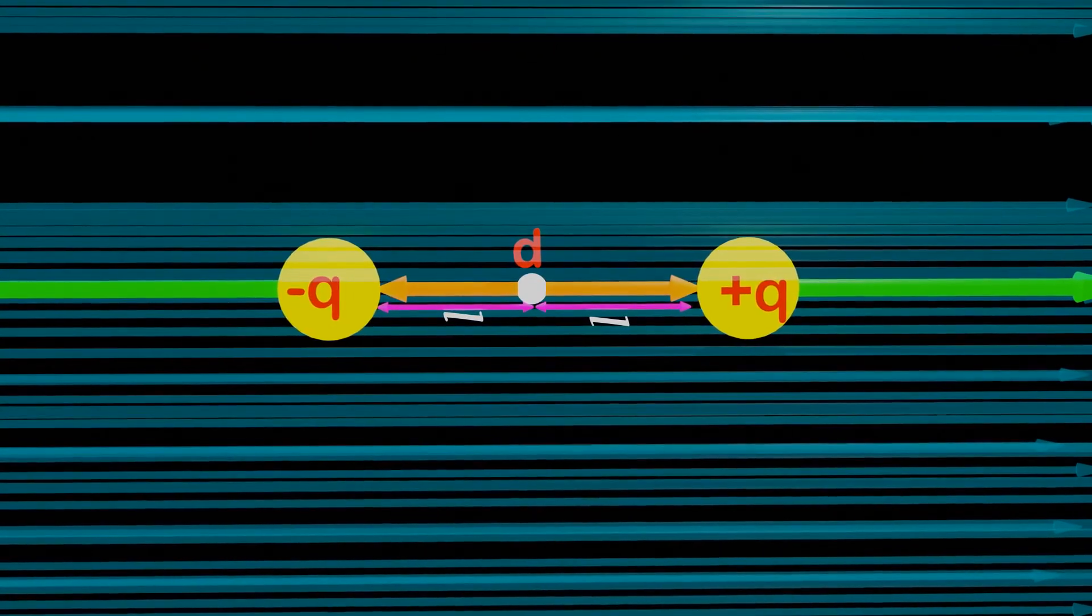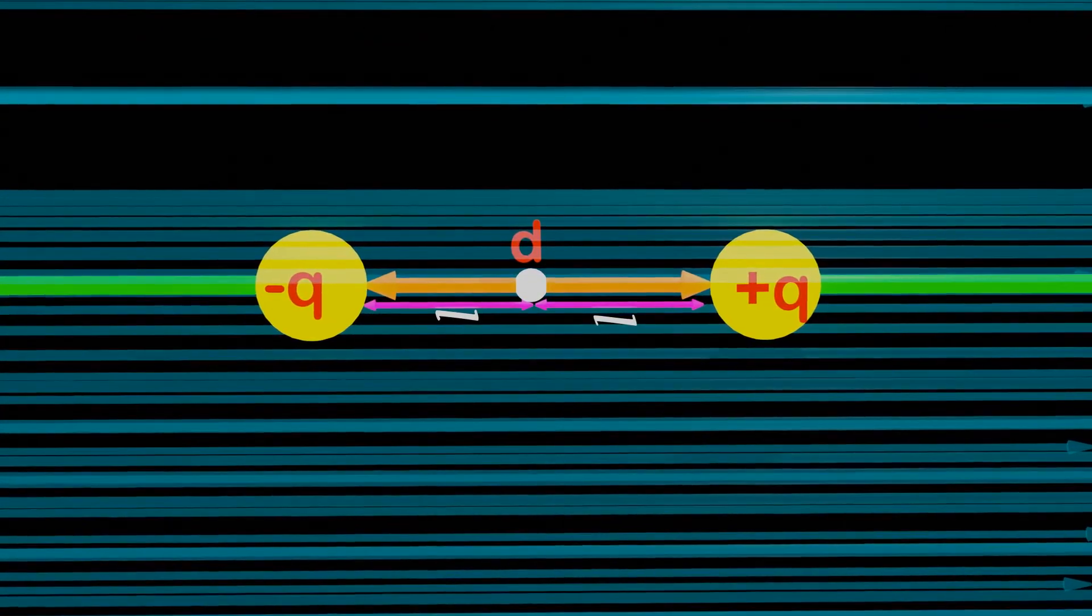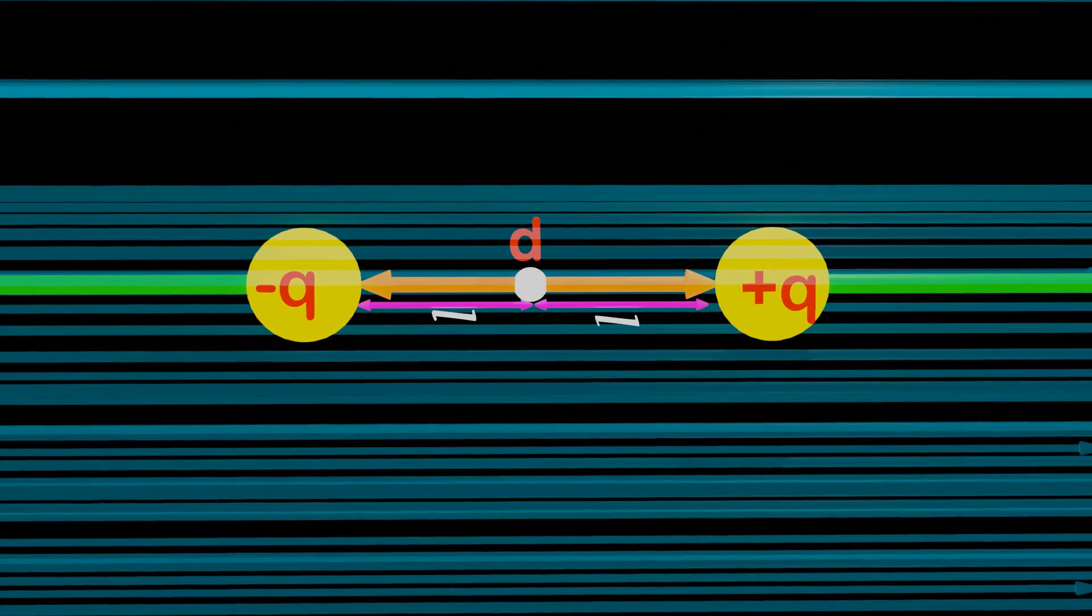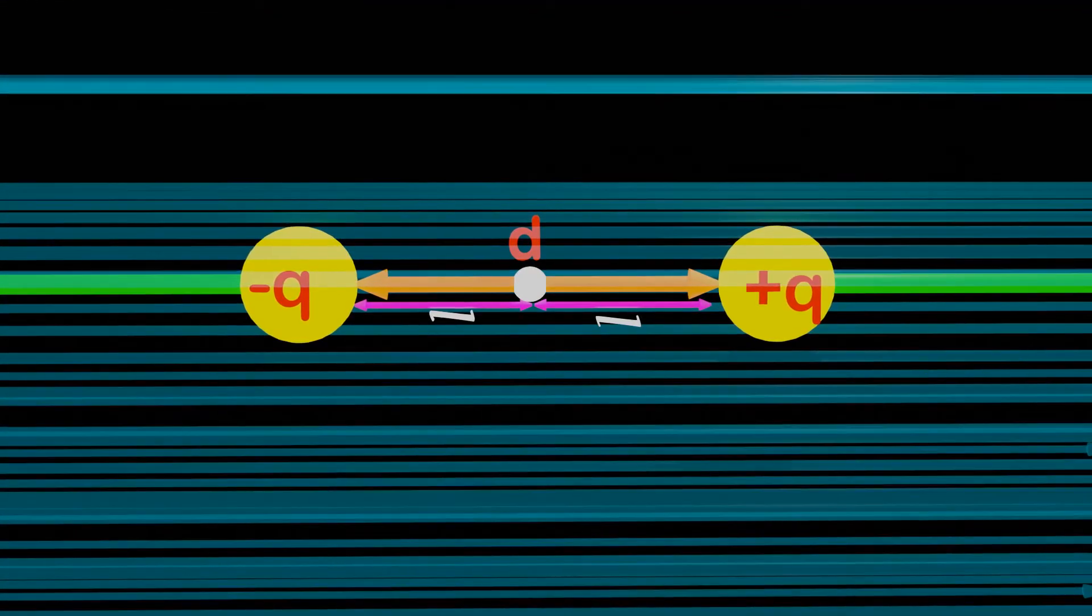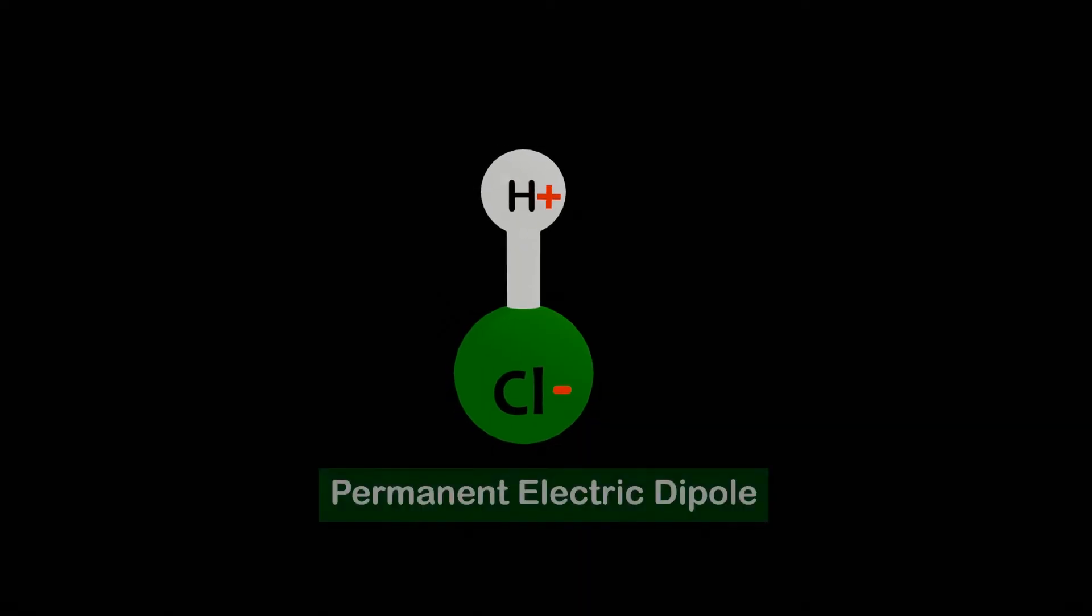The practical application of dipoles is to understand molecular behavior, which affects physical properties such as melting point, boiling point and more. For example, the molecule of hydrochloric acid, HCl, has chlorine which is highly electronegative and hydrogen which is positive, creating a permanent electric dipole.